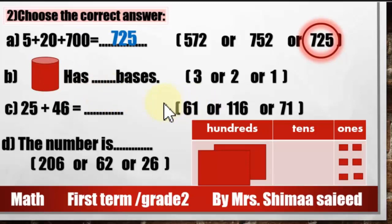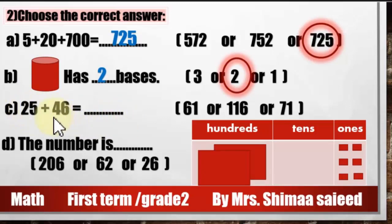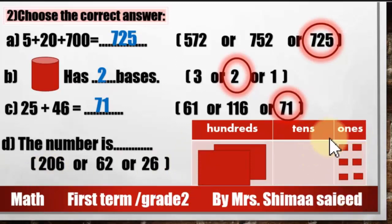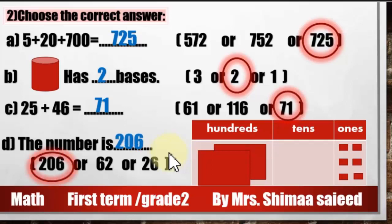Excellent — a cylinder has 2 circular faces. Then 25 plus 46: 20 plus 40 equals 60, 5 plus 6 equals 11, 60 plus 11 equals 71 — adding by regrouping. Now for the place value figure: we have 2 in the hundreds place, 0 in the tens place, 6 in the ones place. Don't forget the 0 in tens — the number is 206, not 26.